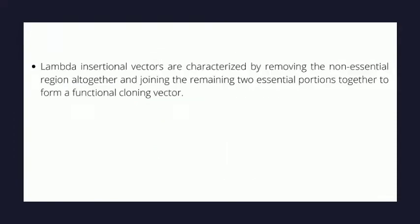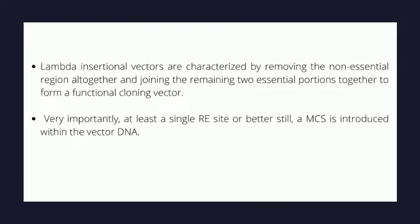Lambda insertional vectors are characterized by removing the non-essential region altogether and joining the remaining two essential portions to form a functional cloning vector. Very importantly, at least a single restriction enzyme site, or better still an MCS, is introduced within the vector DNA.